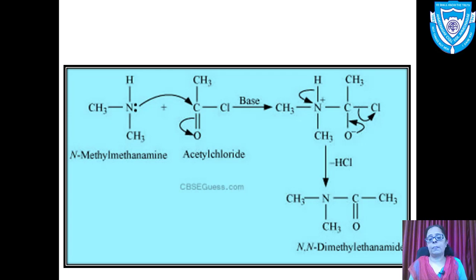In the next step, HCl is liberated and an amide is obtained. The N–H bond is still intact and nitrogen carries a positive charge. Since nitrogen's electronegativity is high, the electron pair between N and H shifts to nitrogen and hydrogen is removed as a proton.